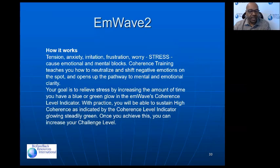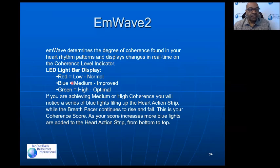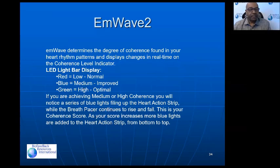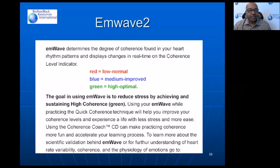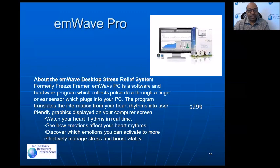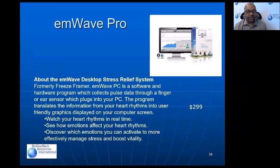The M-Wave 2 measures what HeartMath calls coherence — an indication of the level of heart rate variability. We're usually training to increase to high coherence, which is optimal. Techniques used to increase heart rate variability include paced breathing and positive imagery. A lot of the HeartMath training is connected to paced breathing and positive imagery.